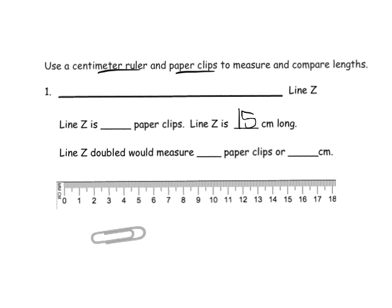And then it says line Z is how many paper clips. So I'm going to take my little paper clip, straighten it out, and line it up right here. Now, because I've got a computer and I can do this, check this out. I think I can click on this and duplicate it, and then I can move it.